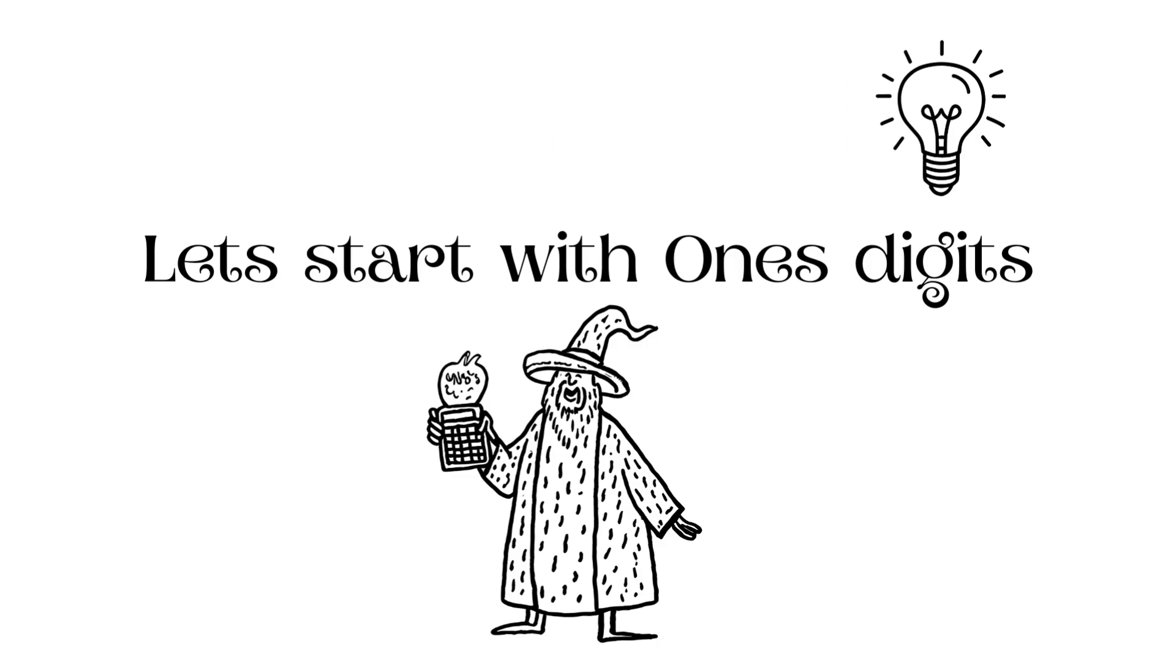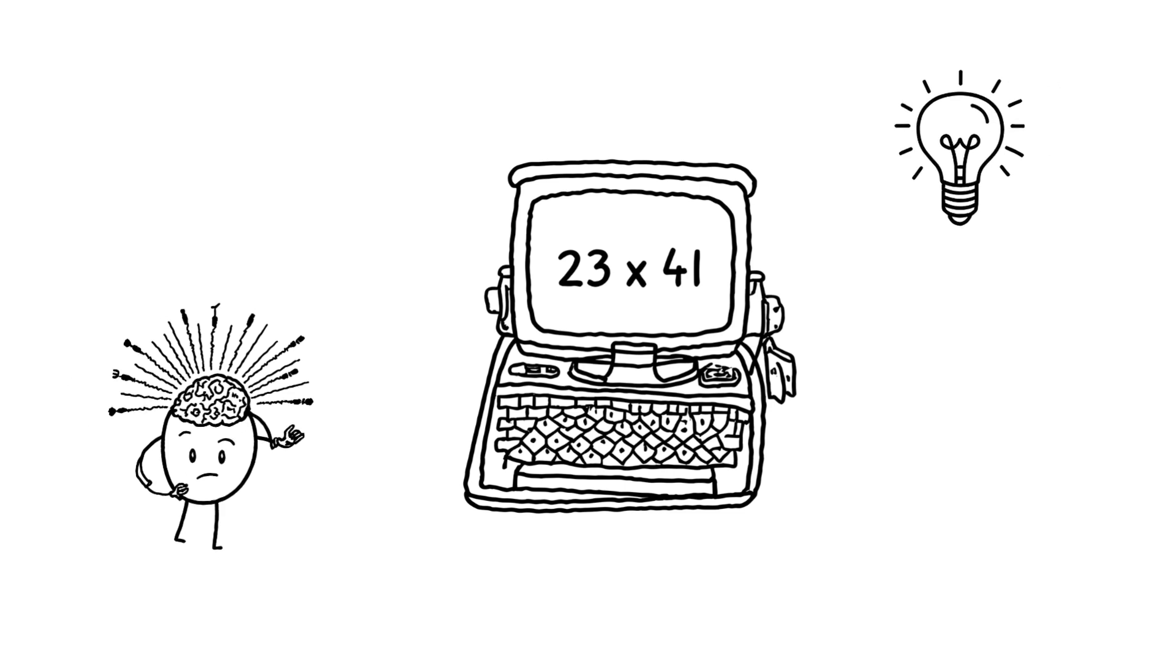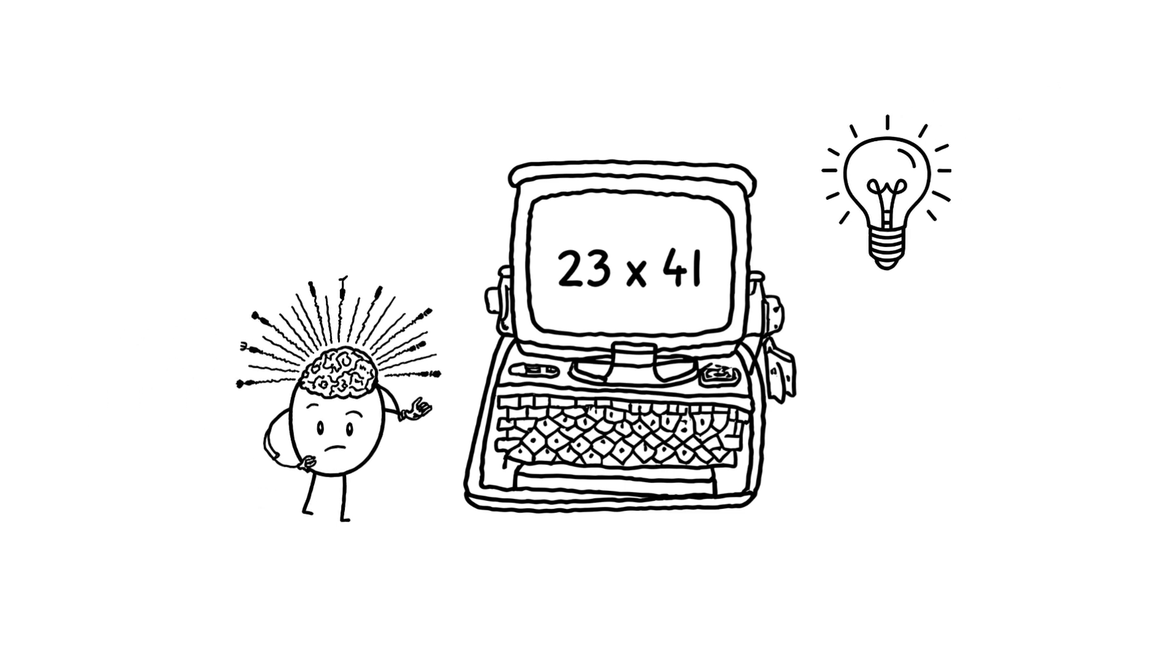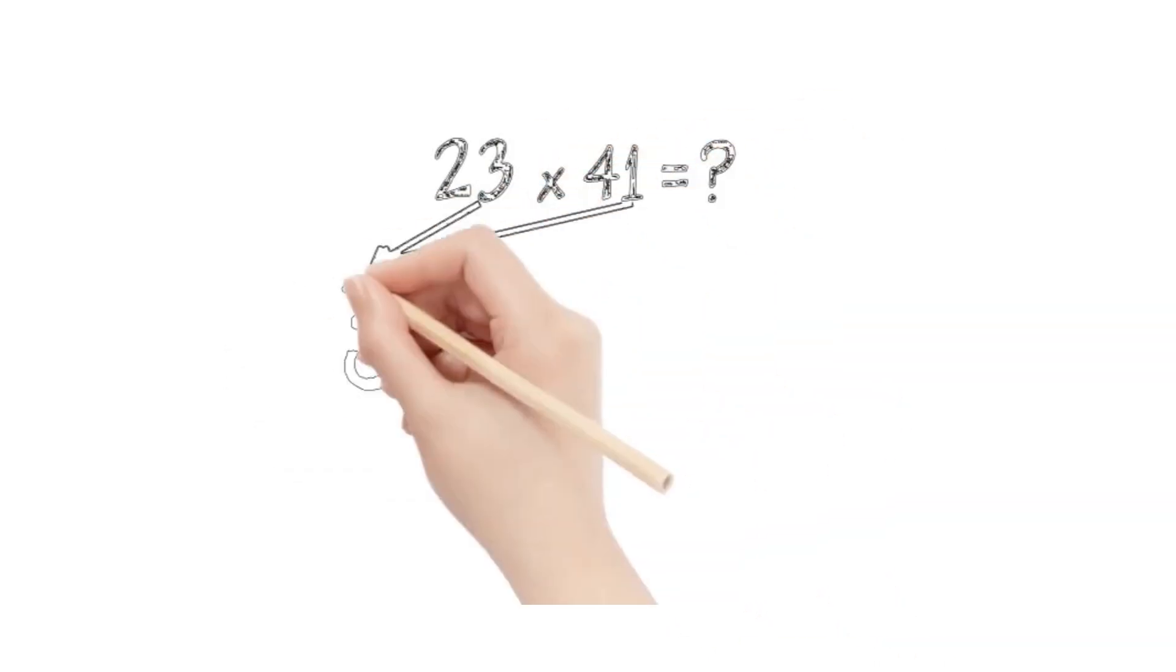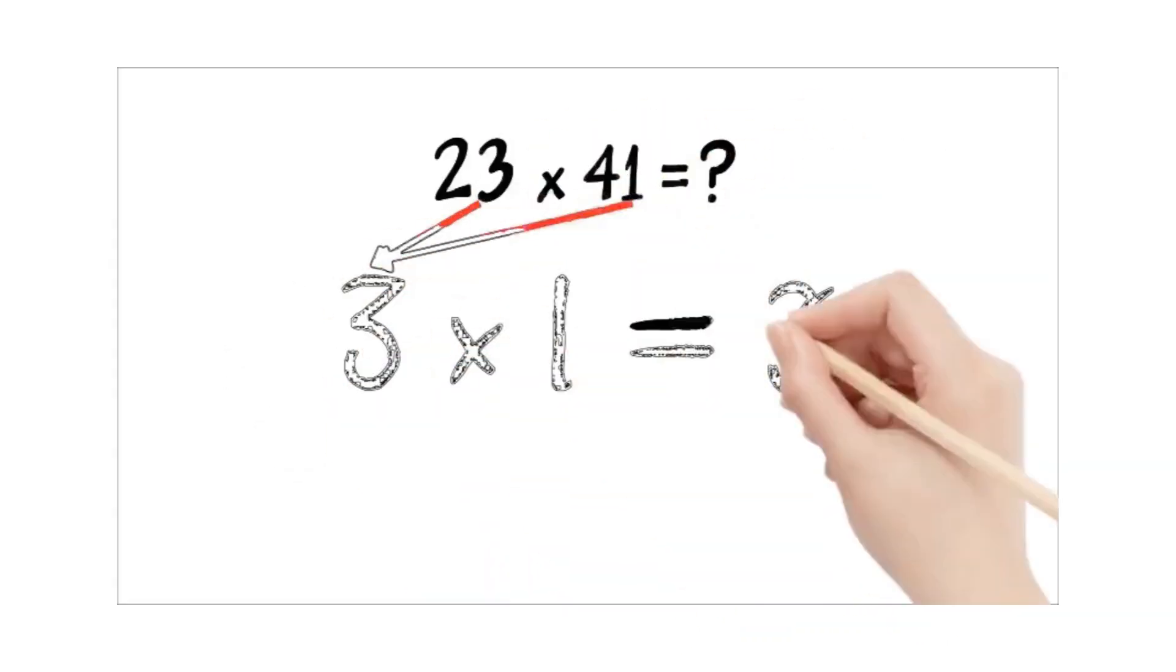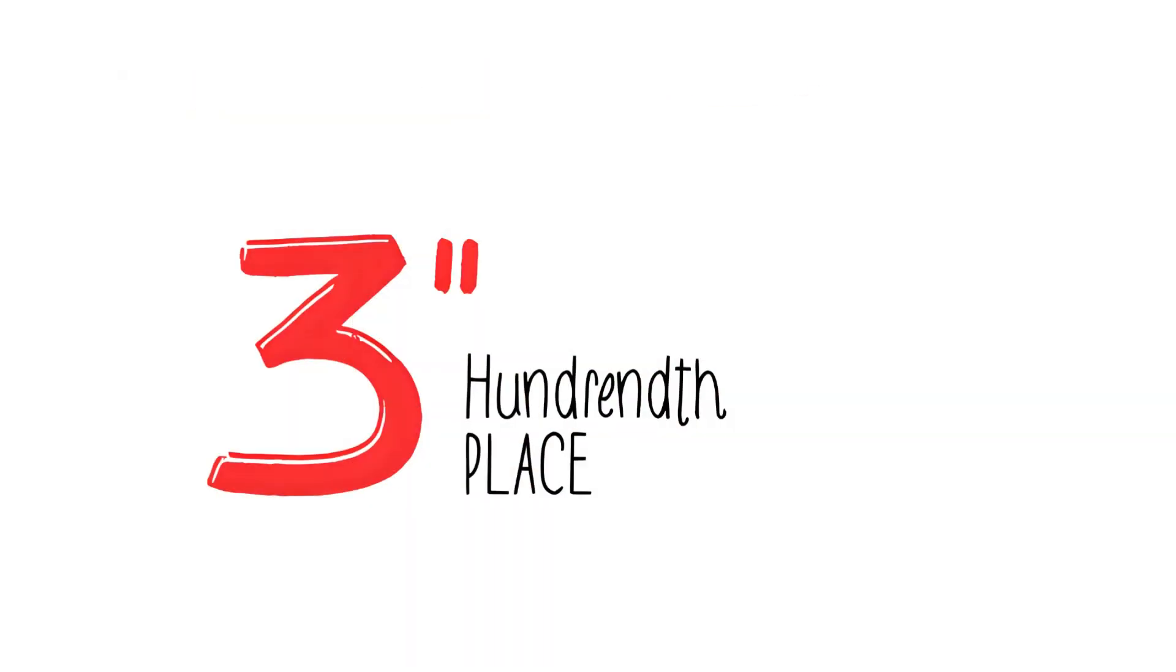First, we'll start on the right side with our ones digits. It's like reading a book backward. We're just going to multiply the two numbers on the far right together. Three times one gives us three. That's the first digit of our answer. We'll write it down here on the right.